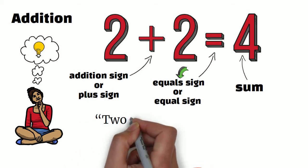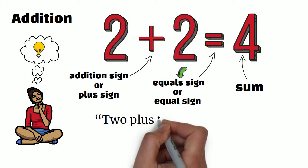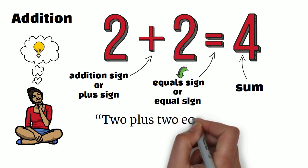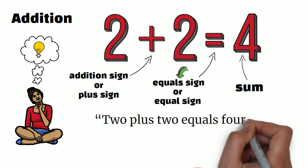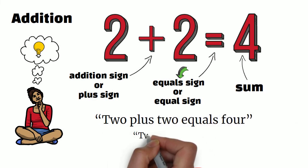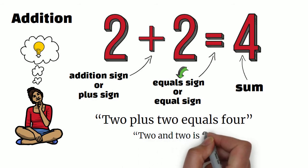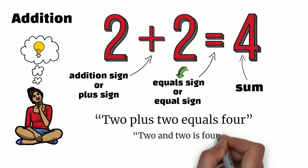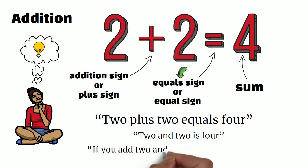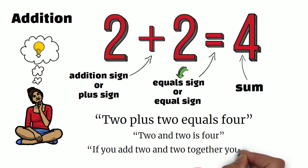We read the whole equation like this: '2 plus 2 equals 4.' Or you could say '2 and 2 is 4.' Or if you want to explain this to someone, you could say 'if you add 2 and 2 together, you get 4.' Let's now move on to subtraction.